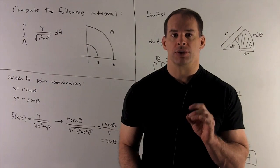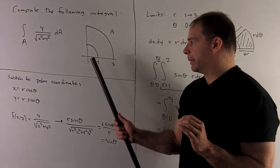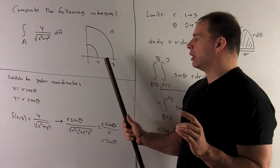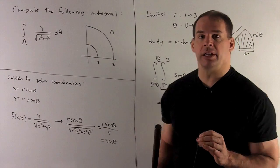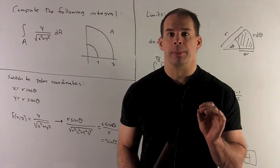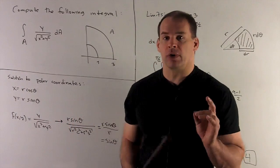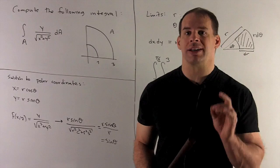Compute the following integral. We have a region A, it's going to be bounded by the x-axis, y-axis, and the circles of radius 1 and radius 3, centered at the origin. The integral's going to be over this region A: y over square root of x squared plus y squared, dA.